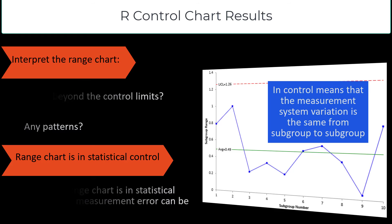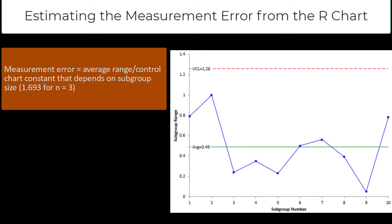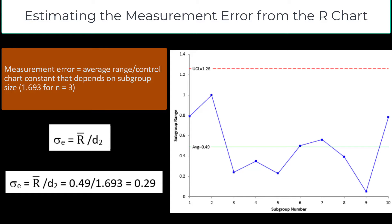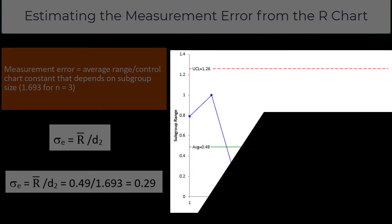Since the R chart is in control, you can estimate the measurement error. To calculate the measurement error from the R chart, it's the average range divided by a control chart constant D2, which depends on subgroup size. For a subgroup size of 3, D2 is 1.693. Doing the calculations gives a measurement error of 0.29 — that's a measure of the variation in the measurement process. Note that if the R chart is out of control, you'll have to find and remove those special causes of variation and repeat the Short EMP Study.